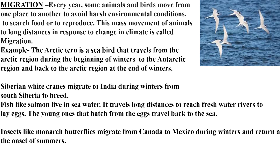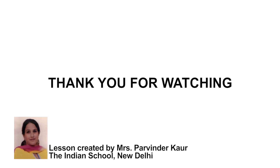Siberian white cranes migrate from south Siberia to India during winters to breed and lay eggs. Fish like salmon live in sea water but travel long distances to freshwater rivers to lay eggs; the young ones hatch and travel back to the sea, returning as adults to lay eggs again. Insects like monarch butterflies migrate from Canada to Mexico during winters and return at the onset of summer. These are the different ways animals adapt themselves in order to survive.